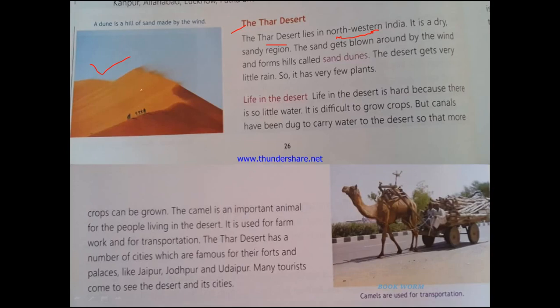Due to this phenomenon of the wind moving the sand around, small hill-like formations are seen. In the picture you can see this kind of hill-like region, but it is not actually a mountain or a hill — it is a deposition of sand. Such depositions are known as sand dunes.